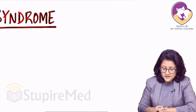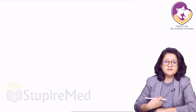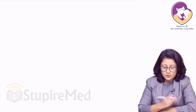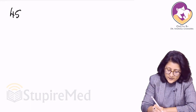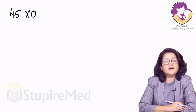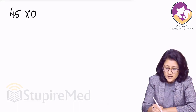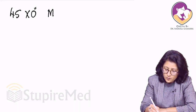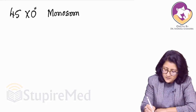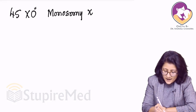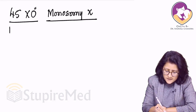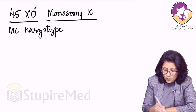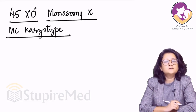What happens in Turner syndrome? Basically, Turner syndrome is an aneuploidy most commonly. Turner syndrome has a karyotype of 45XO, in which one of the X chromosomes is missing. It is a monosomy X, and this is the most common karyotype in women who have Turner syndrome.